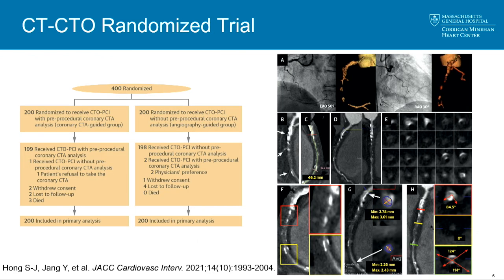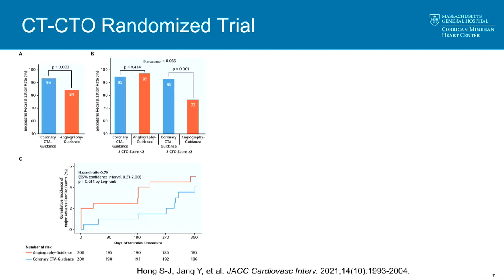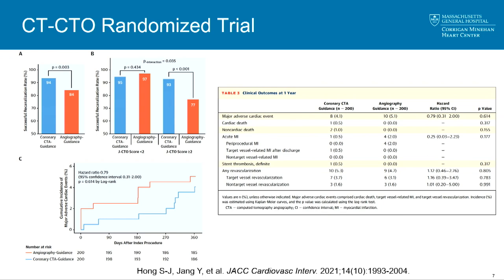The first randomized controlled trial to discuss is the CT-CTO trial, conducted in South Korea. 400 patients were randomized one-to-one to pre-procedural CT versus angiography alone, with technical success as the outcome. They found a 10 percent increase in crossing the CTO using pre-procedural CT compared to angiography alone, and this benefit was seen particularly in those with a JCTO score of two or higher.